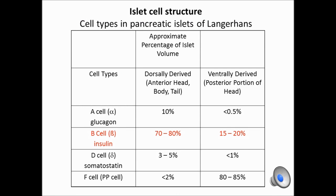The islets of Langerhans consist of 4 different cell types. We have alpha cells secreting glucagon, beta cells secreting insulin, delta cells secreting somatostatin, and F cells or PP cells secreting pancreatic polypeptide. We don't really know very well the role of pancreatic polypeptide. We do understand the role of the other hormones in glucose homeostasis.